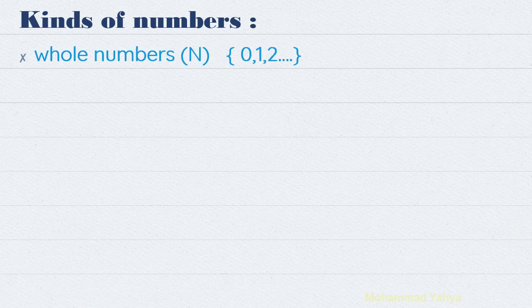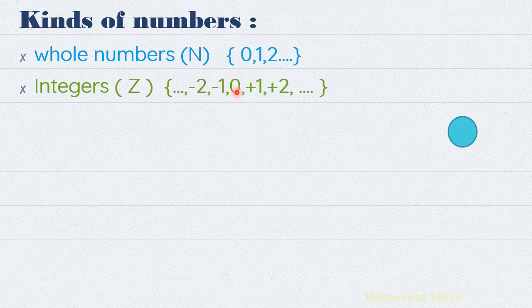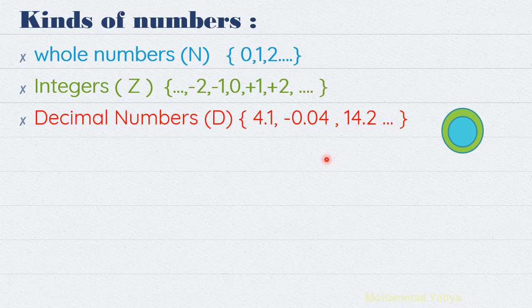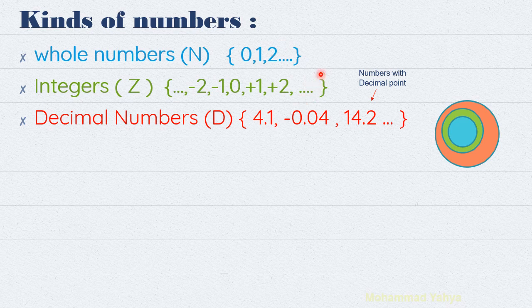Let's summarize everything. The kinds of numbers are: first, whole numbers, set N, used to count — represented by a small blue circle. Then integers, set Z, which are whole numbers plus the negative numbers — the green circle contains the blue one. Then decimal numbers — whole numbers and integers are also decimal numbers because each can be written with a decimal point, like 2.0 or minus 2.0.